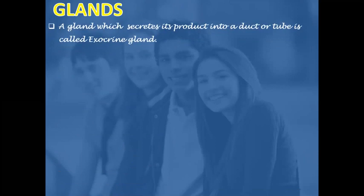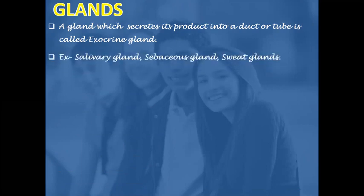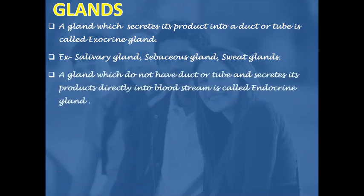A gland which secretes its product into a duct or tube is called an exocrine gland, also called ducted glands. Examples are salivary gland, sebaceous gland, sweat glands, and liver. A gland which does not have a duct or tube and secretes its products directly into the bloodstream is called an endocrine gland.